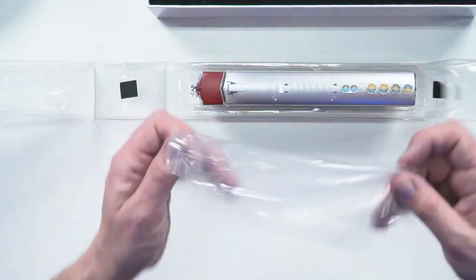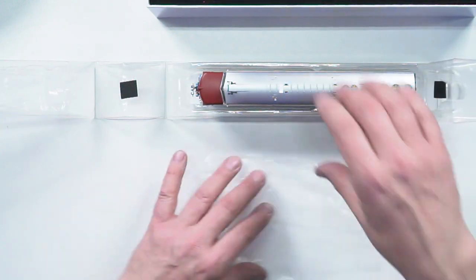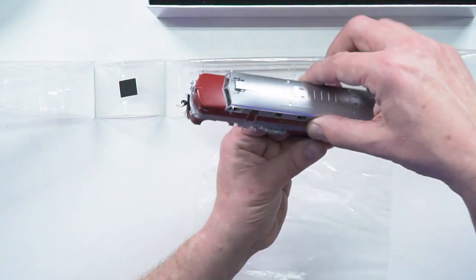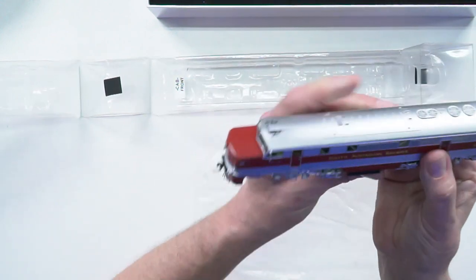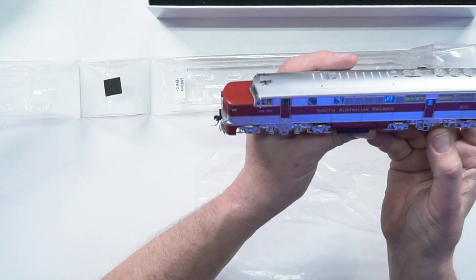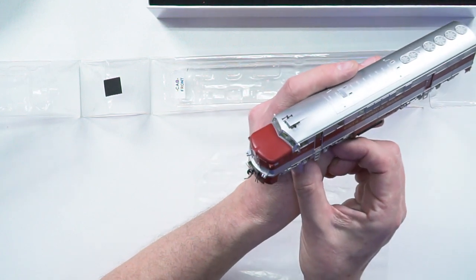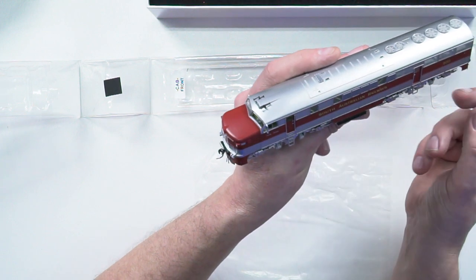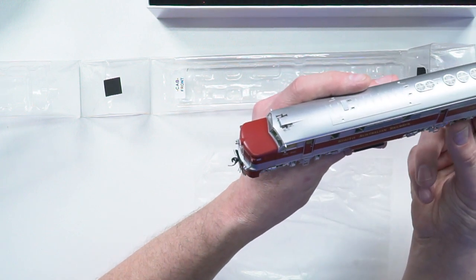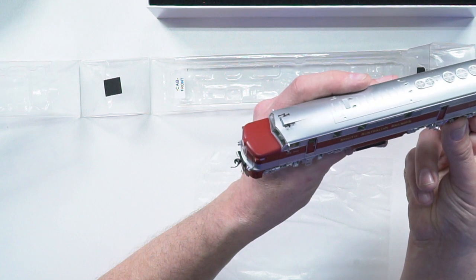All right, here we go. Now the first impressions on seeing this model is like wow, it really is an awesome looking loco. And if you've ever seen the real thing at the Port Dock or the National Railway Museum in Adelaide, you can't help but being impressed.